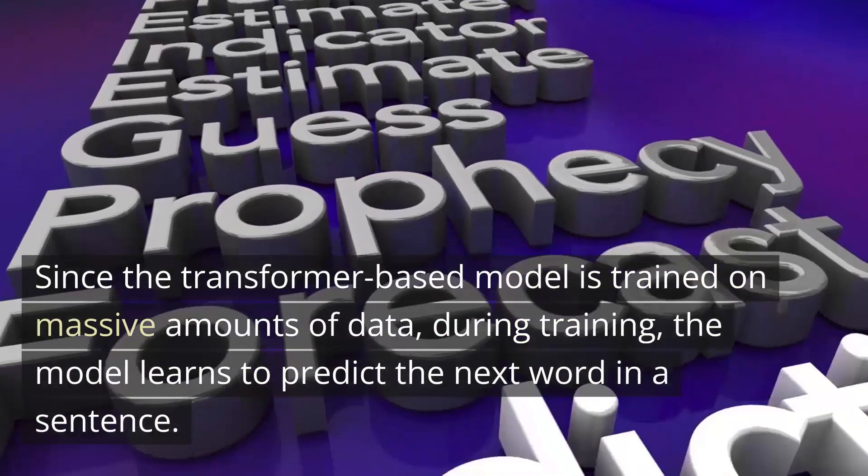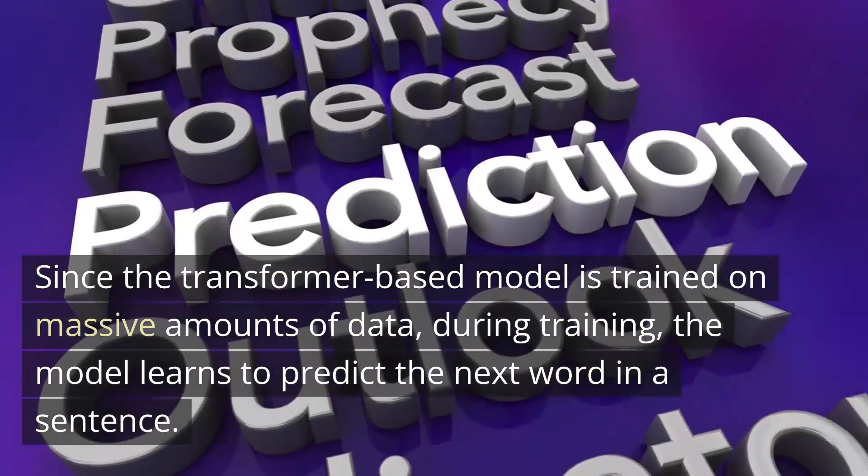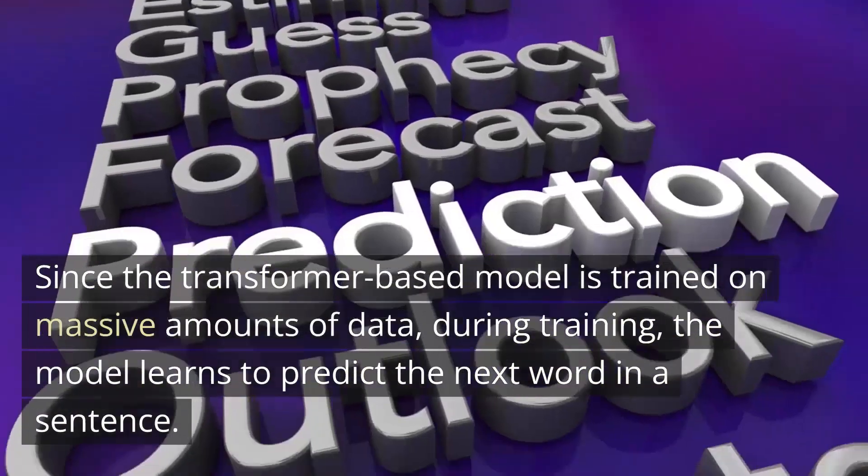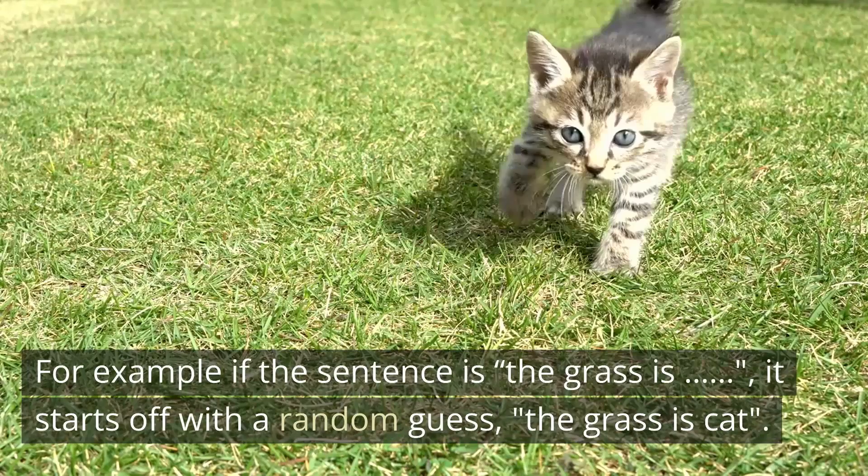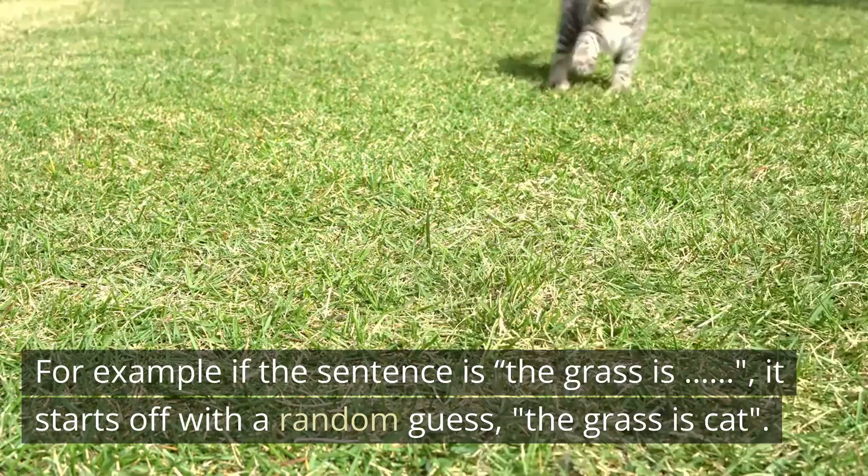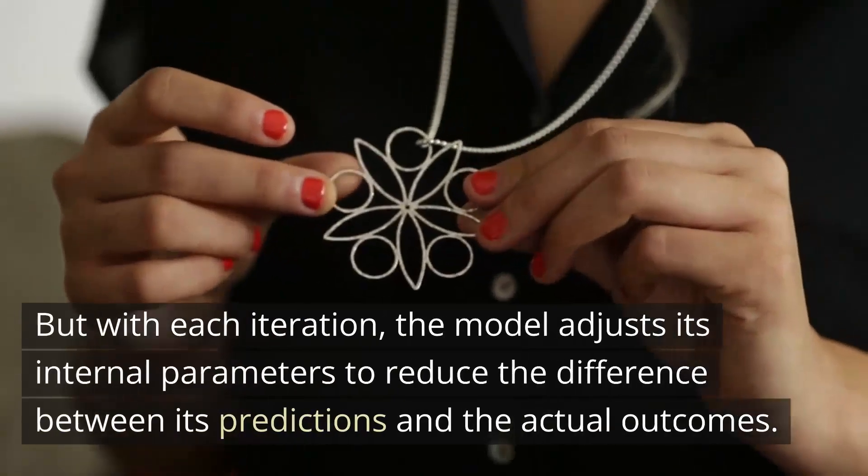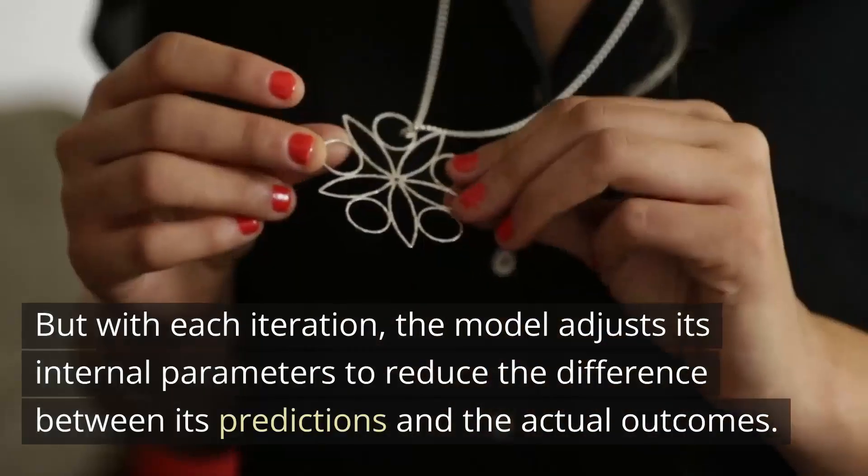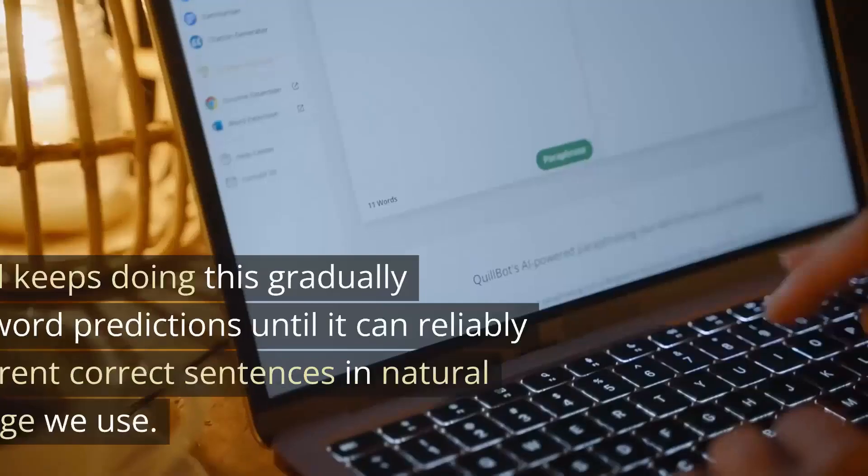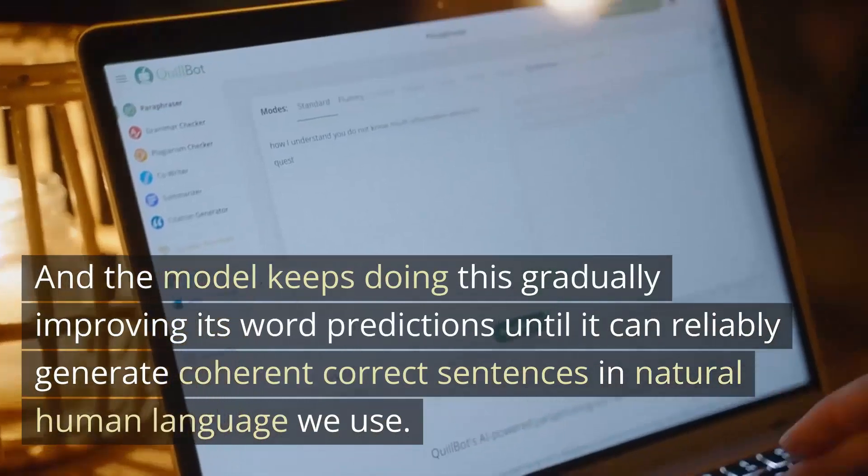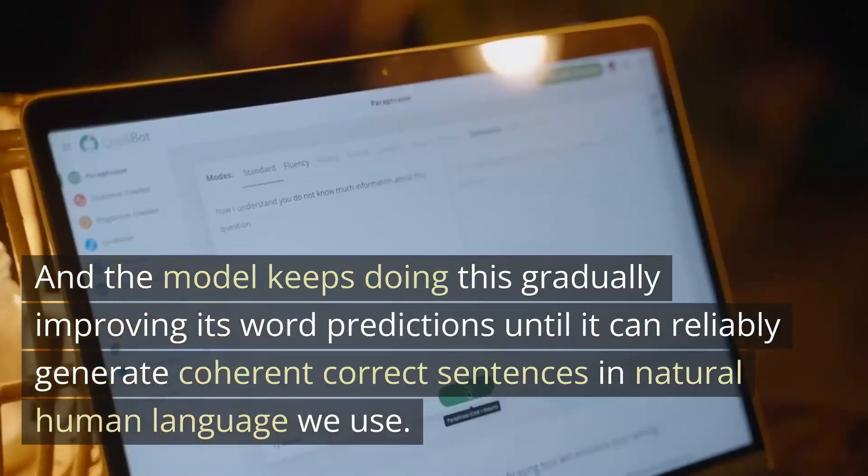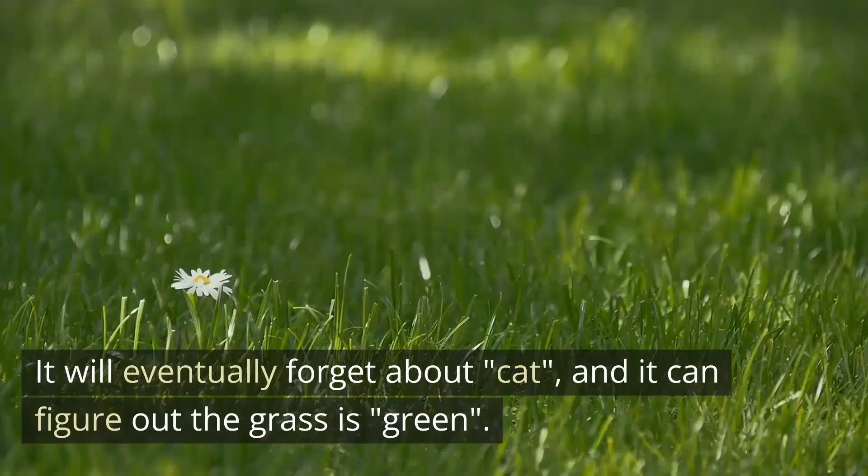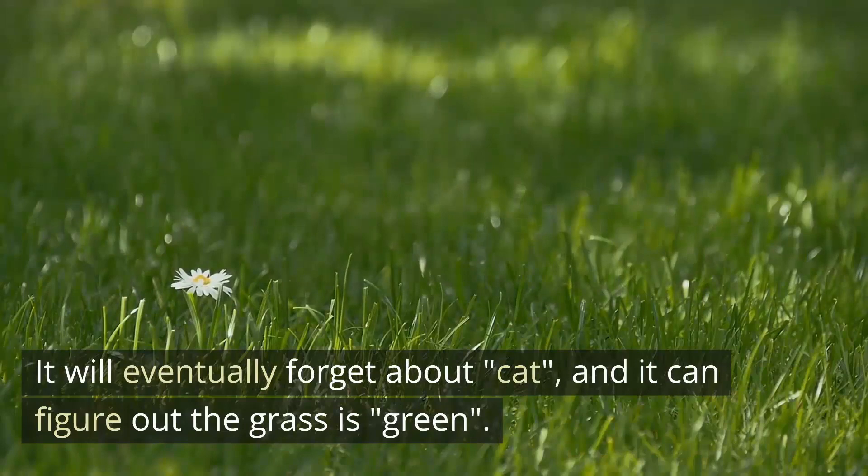It builds new text in form of sentences that make sense. Now let's expand this further. We know that transformers are designed to understand the context of each word in a sentence by considering it in relation to every other word. This allows the model to build a comprehensive understanding of the sentence structure in the right sequence and the meaning of the words within it. Since the transformer-based model is trained on massive amounts of data, during training, the model learns to predict the next word in a sentence. For example, if the sentence is 'the grass is,' it starts off with a random guess, 'the grass is cat.' But with each iteration, the model adjusts its internal parameters to reduce the difference between its predictions and the actual outcomes.